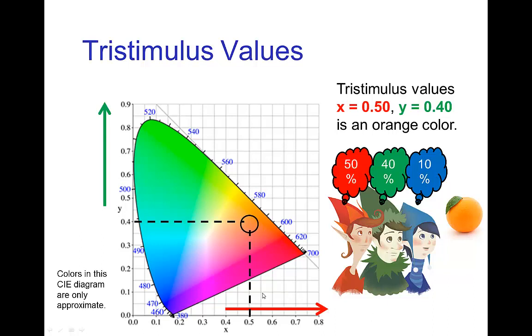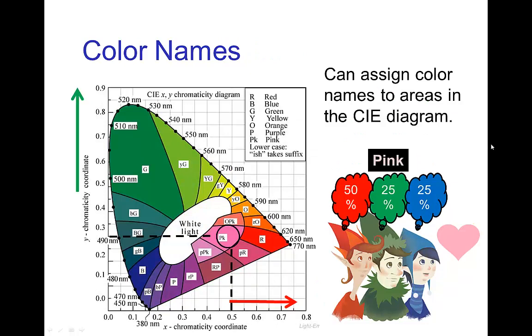Now to understand how to read this map, you'd say, well, if the tri-stimulus values, if the red cone is fifty percent of the excitement and the green cone is forty percent, which means the blue must be just ten percent, that is a value of point five in the horizontal axis, point four which is forty percent in the vertical axis. Then we read off this map and we see that lands in the region of orange. So when we're looking at orange, that is the set of tri-stimulus values.